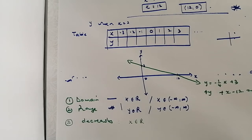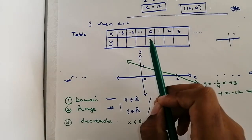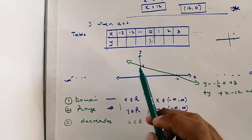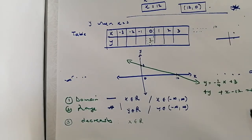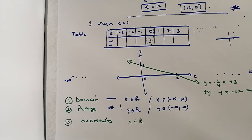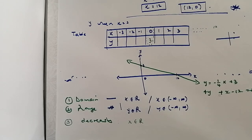Alright guys, this is how you plot a straight line graph. You can also use the table method — note that the y-intercept will appear in the table, and you'll need to extend your x values to 12 to capture the x-intercept, so that both axes are included in your graph. I trust you understand. If you have any questions, comment below or email me, and I'll get back to you. Stay blessed and enjoy the rest of your day.